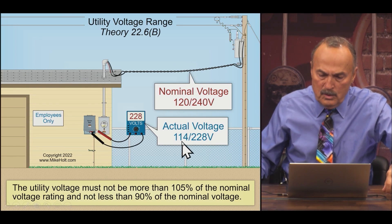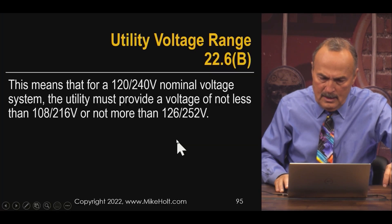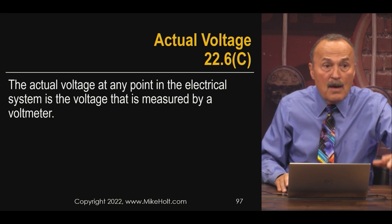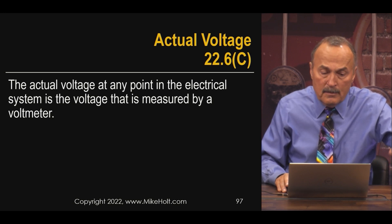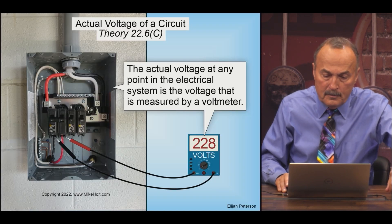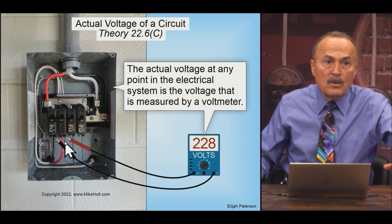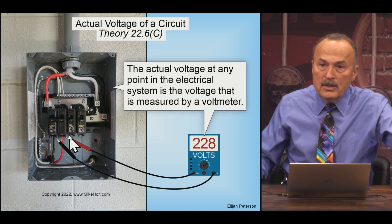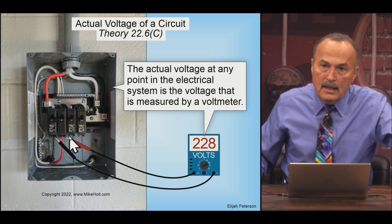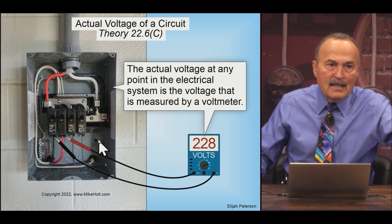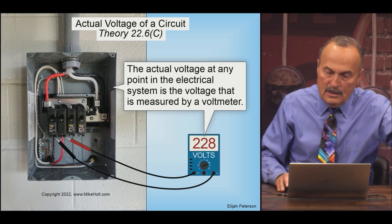The nominal system voltage — the actual voltage would be 108/216 at 90%. This is what electricians are measuring. The actual voltage at any point in the electrical system is the voltage measured by the voltmeter. So you take a voltmeter and it reads 208 — but we don't size the wire and we don't do any calculations based on the actual voltage. We've got to go with, in name only, the nominal system voltage. It could be less, it could be higher, and it's close enough.